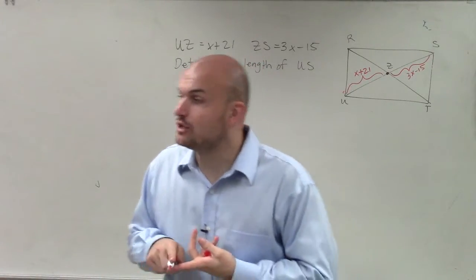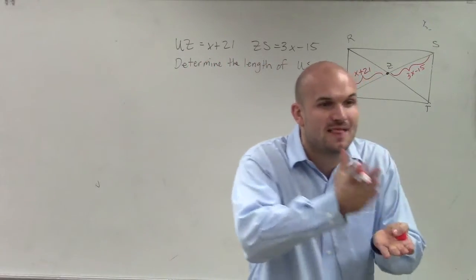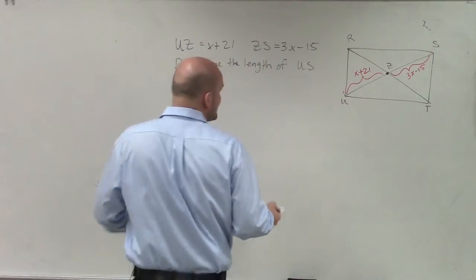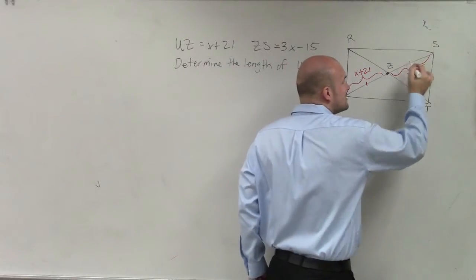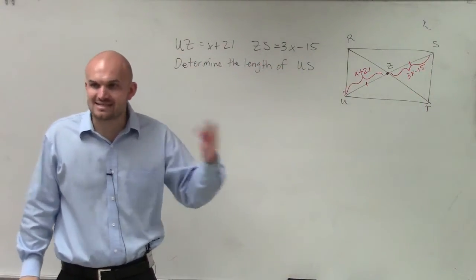There's a couple things. One, we know the diagonals of a rectangle bisect each other. That means they cut them in half. So what that means is this side has to be exactly the same as that side, because the diagonals bisect each other.